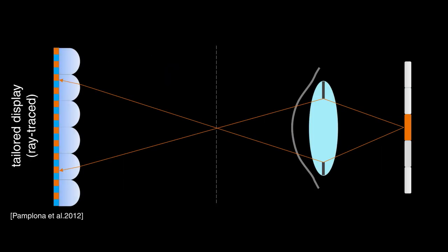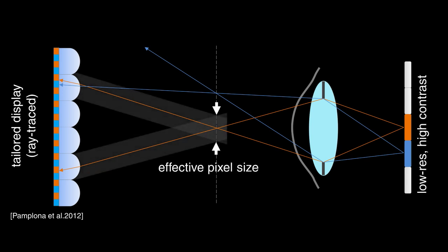Pamplona et al. uses a light field display, so that each ray is mapped to exactly one view. Due to the number of views required, the received pixel is large, and the resolution is low.